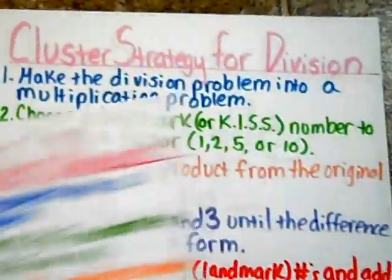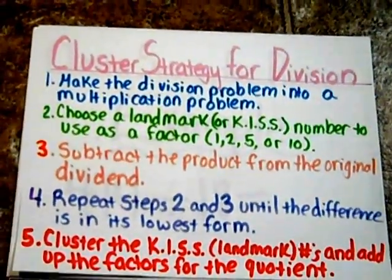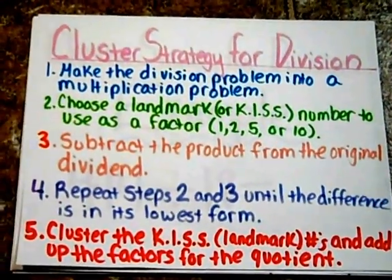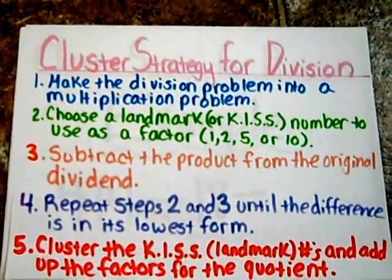Finally, step number five. Cluster the KISS landmark numbers and add up the factors for the quotient.